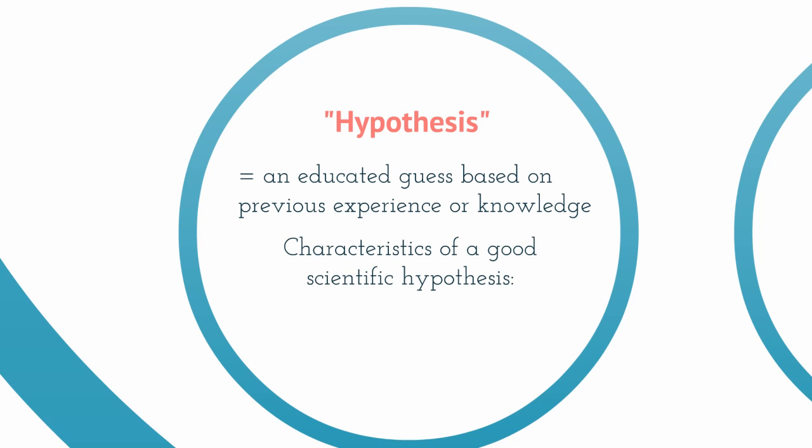And there's a couple key parts to that definition. Educated guess - it has to be something based on prior knowledge. It can't be just a wild guess with no basis in any kind of background or fact. So, why are pallet bats in Oak Woodlands? Because the aliens put them there. That's maybe not an educated guess. That's a guess.